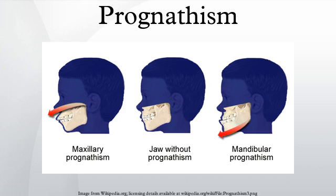Prognathism is the positional relationship of the mandible and/or maxilla to the skeletal base where either of the jaws protrudes beyond a predetermined imaginary line in the coronal plane of the skull. In general dentistry, oral and maxillofacial surgery, and orthodontics, this is assessed clinically or radiographically.